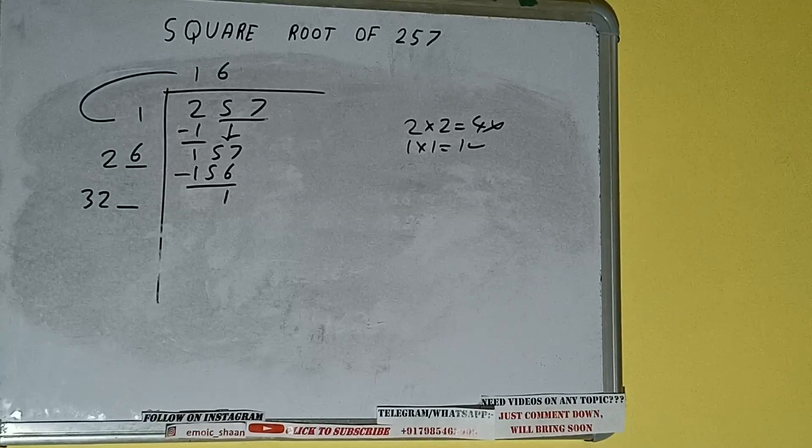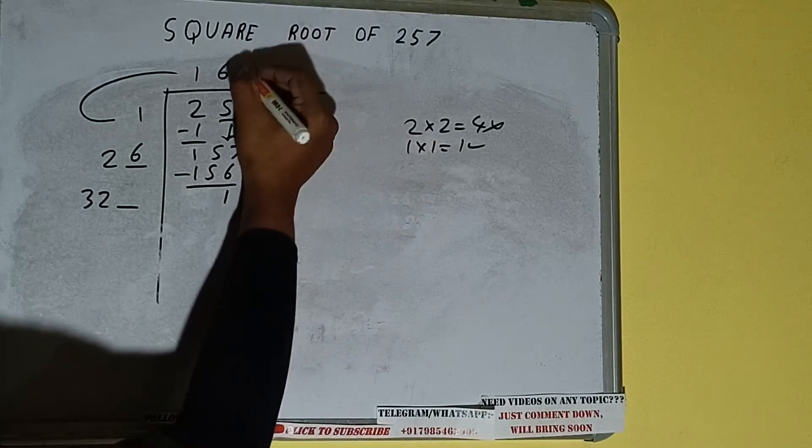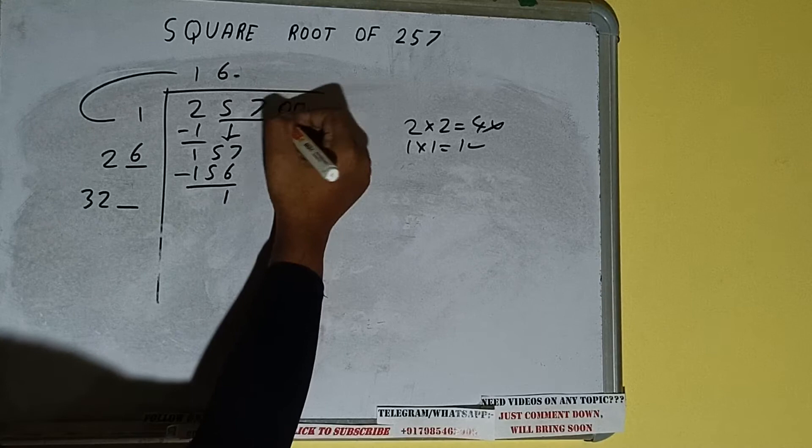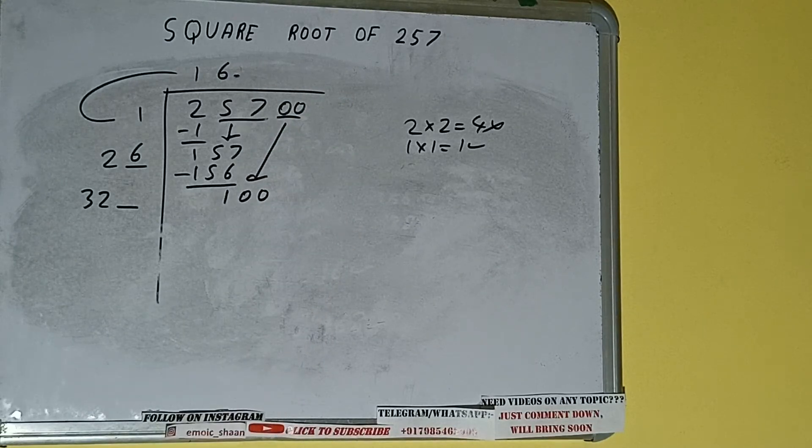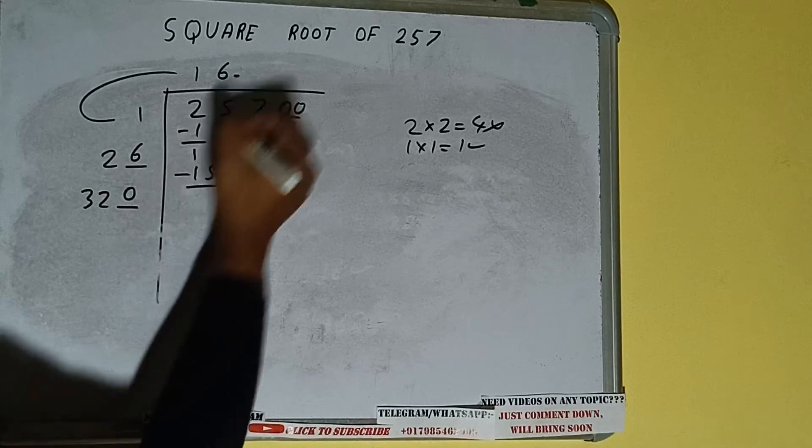But we don't have more pairs, so we'll put decimal. Once we put decimal, we can bring pair of zeros down and it will be 100.